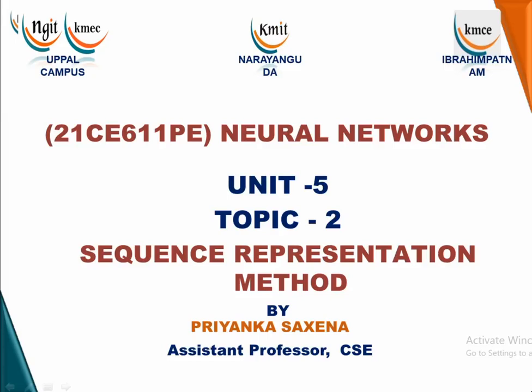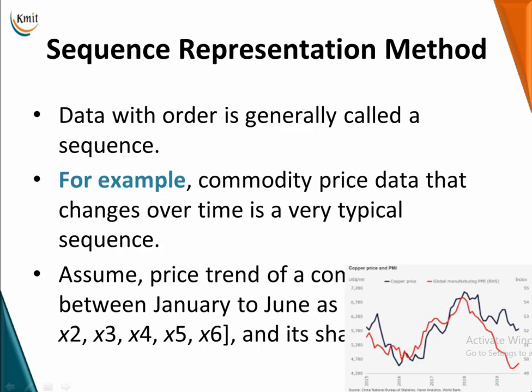We are going to see the next topic, which is our second topic of Unit 5: sequence representation method. Data with order is generally called a sequence. For example, any commodity price that is changing over time is a typical sequence. You can assume that prediction of a stock market with respect to time is also a sequence.